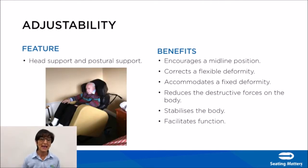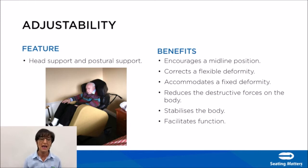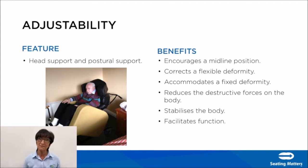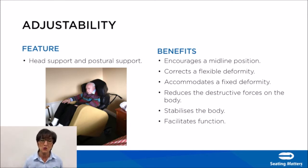The next feature is head support and postural support. A chair must be adjustable to meet the particular needs of your patient — for example, a patient with a marked kyphosis. Having head support and postural support encourages a midline position, can correct a flexible deformity or accommodate a fixed deformity, reduces the destructive forces at work on the body, stabilises the body, and facilitates function.